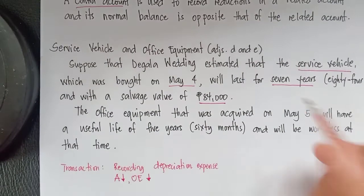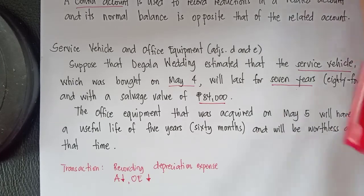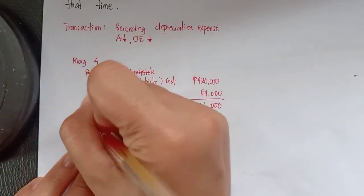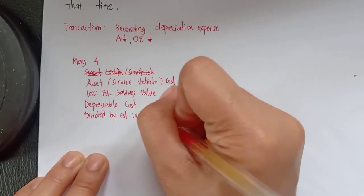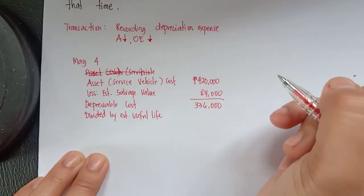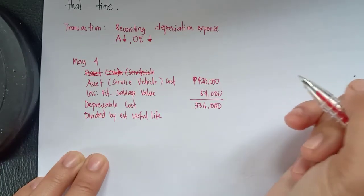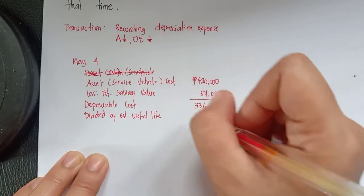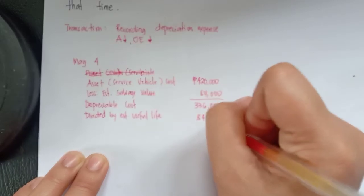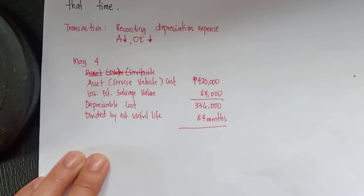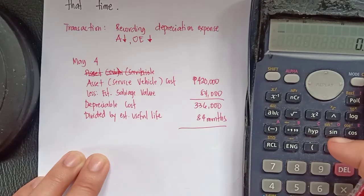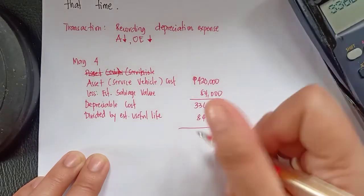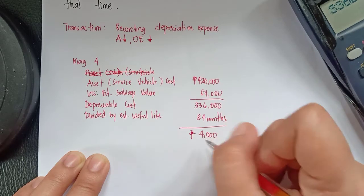Next, how many years is the useful life? Seven years, equivalent to 84 months. We divide the depreciable cost by the estimated useful life of 84 months because we are taking the depreciation at the end of the period on May 31 — so we divide per month. The monthly depreciation expense is 4,000 pesos.